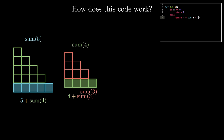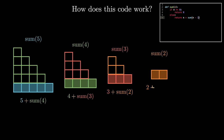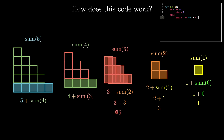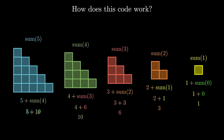This continues until we hit the base case, which is then used to solve the sum function called on n equals 1, which then solves the sum function called on n equals 2, and so on and so forth, until we eventually build up the solution for our original n equals 5 case. It's always okay to take some time to unravel the recursion to ensure that things work, but as you get more experience solving these type of problems, there's a concept called the recursive leap of faith that I would like you to think about.